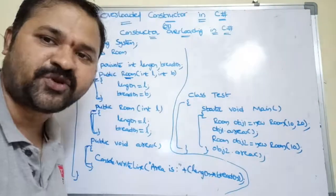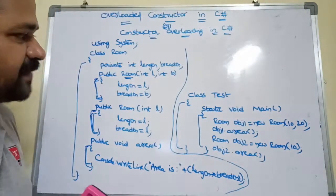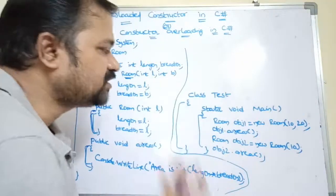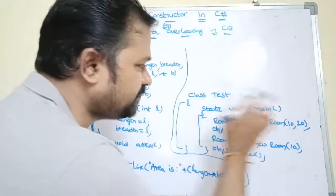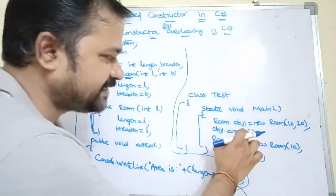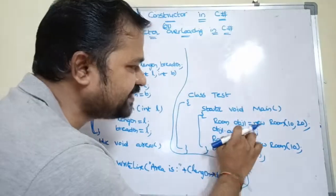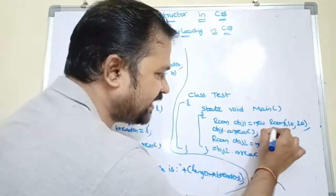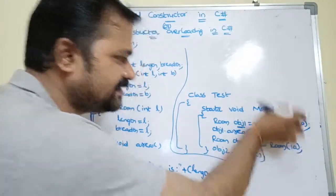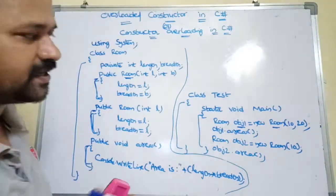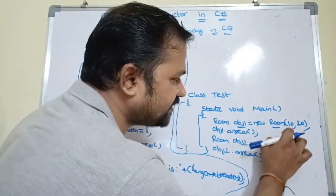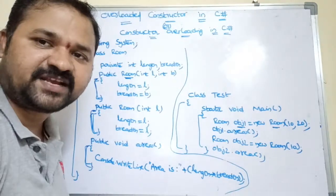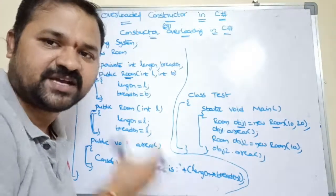Execution of the program starts from the main method. The class name is Test. An object is created: Room obs1 = new Room(10, 20). Whenever an object is created the corresponding constructor is called. Here 10 is the first argument and 20 is the second argument, so the constructor which takes two integer values will be accepted.